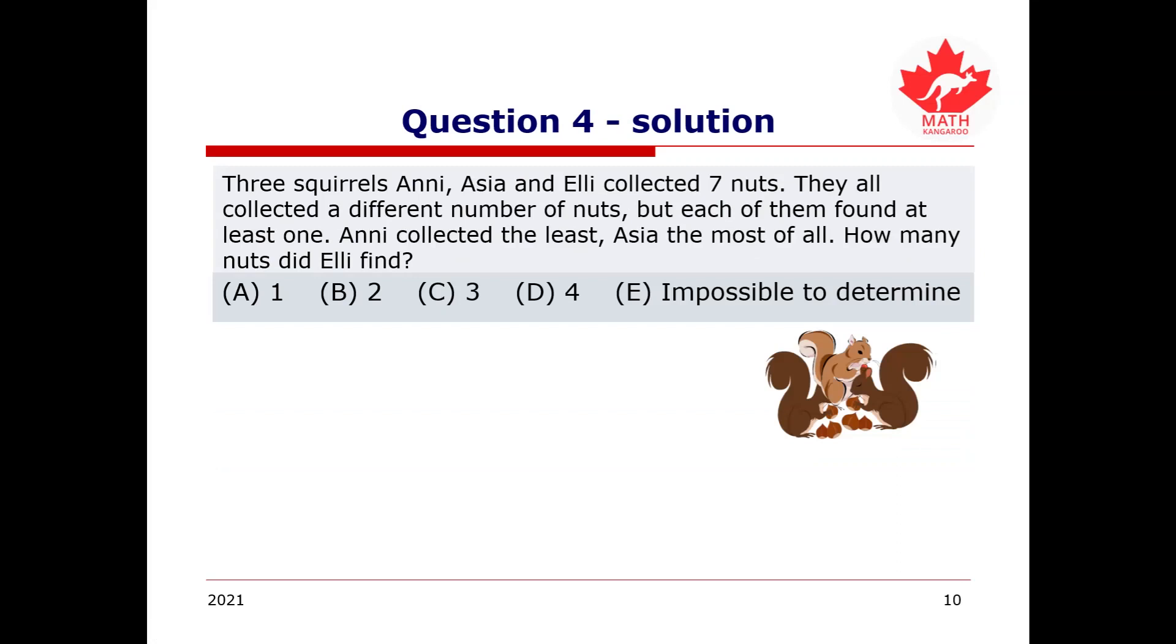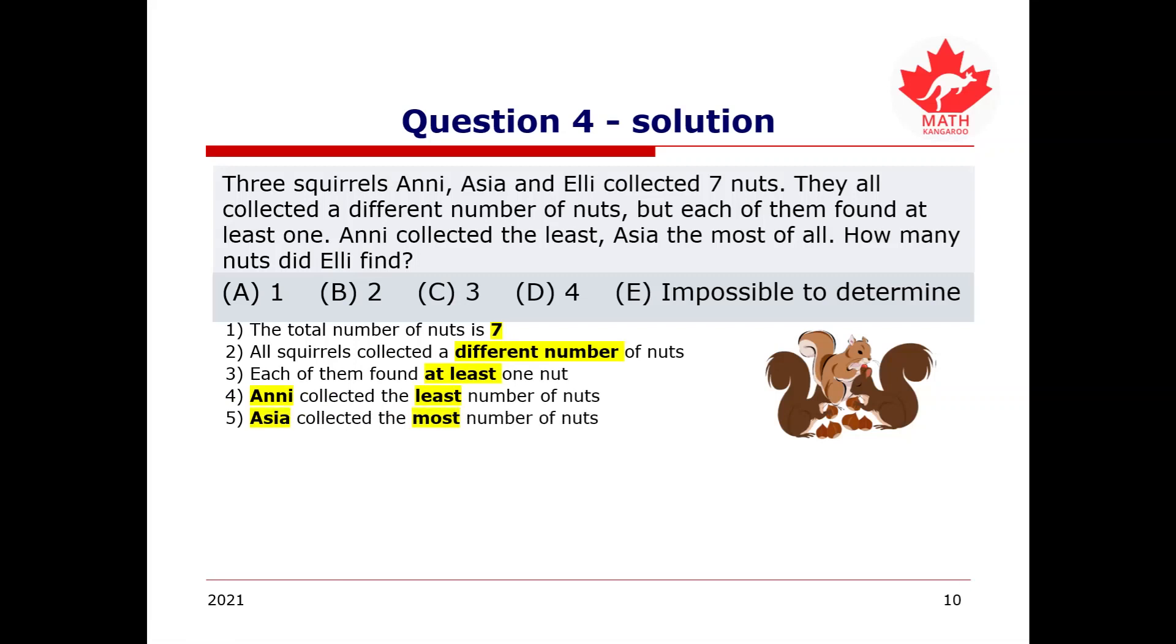So, with this question, there are quite a few clues that have been given to us, and it can be beneficial to us to lay them out to help us analyze the problem. So, the first thing we know is that the total number of nuts that was collected is seven. Second, we know that all the squirrels collected a different number of nuts. Third, we know that each of them found at least one nut. Fourth, we know that Annie collected the least number of nuts. And finally, Asia collected the most number of nuts. So, having listed these clues out, we can look at the first three clues and realize that we just want to represent seven as a sum of three different whole numbers, and those numbers shall not be zero as, since clue number three tells us, that each of them found at least one nut.